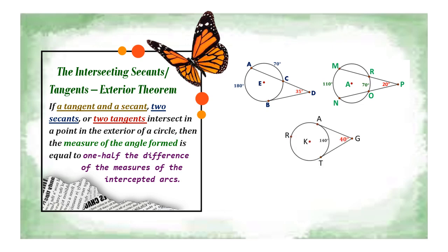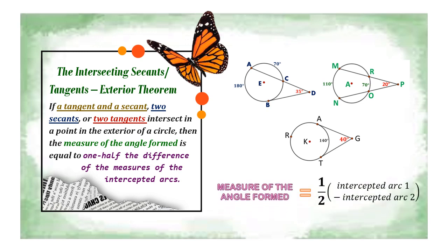The third case involves two tangents. In our illustration we have tangent segment AG and tangent segment DG. The formula is the same. To simplify: the measure of the angle formed at the exterior point equals one-half the difference of the intercepted arcs — where intercepted arc one is the bigger arc minus the smaller arc.